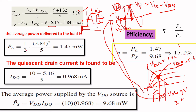We know that the load power formula is (1/2) times VP squared divided by RD. Here RD is 5 kilo ohm, and VP is 3.84. If you substitute, you will get 1.47 milliwatts.